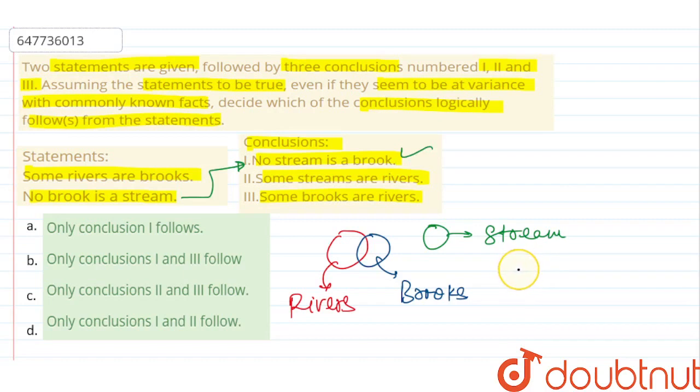Brook and river is a similar relation, but you don't have any idea about river and stream. Stream can be here or on the side of the river. So conclusion 2 is wrong because it is not certain.